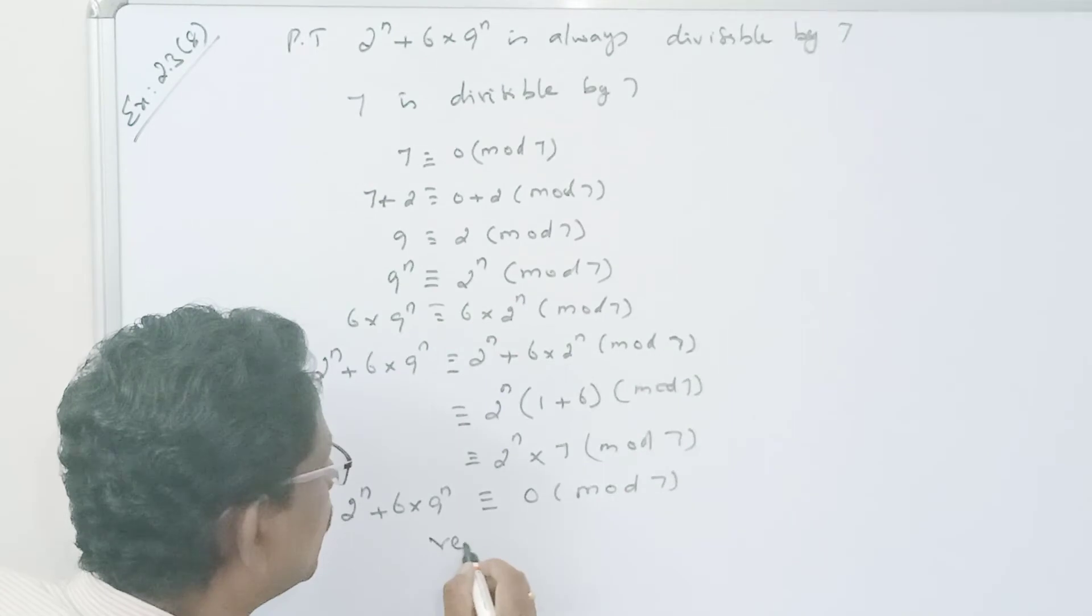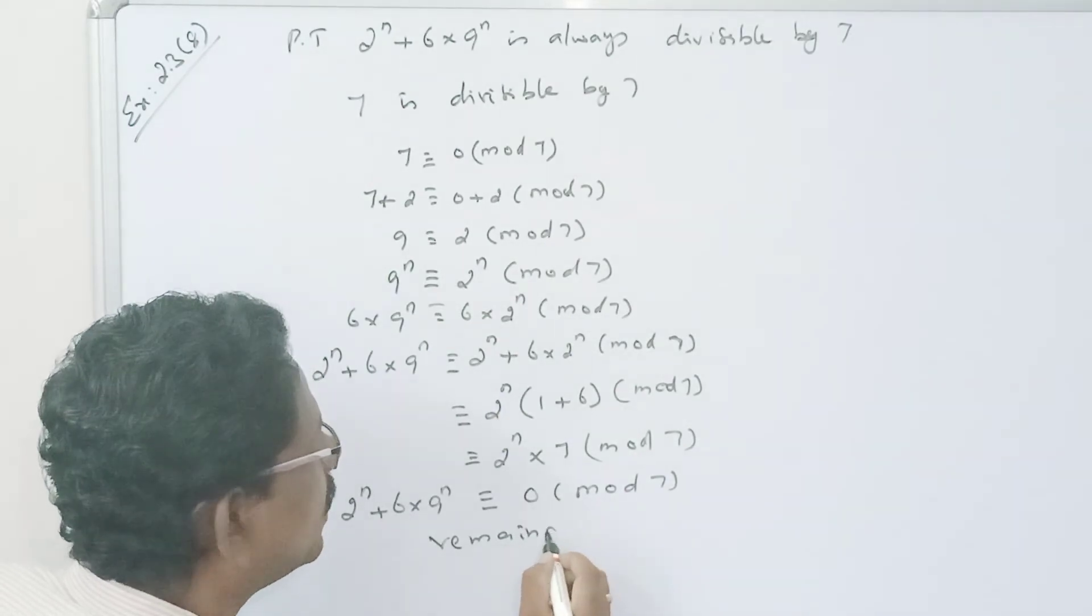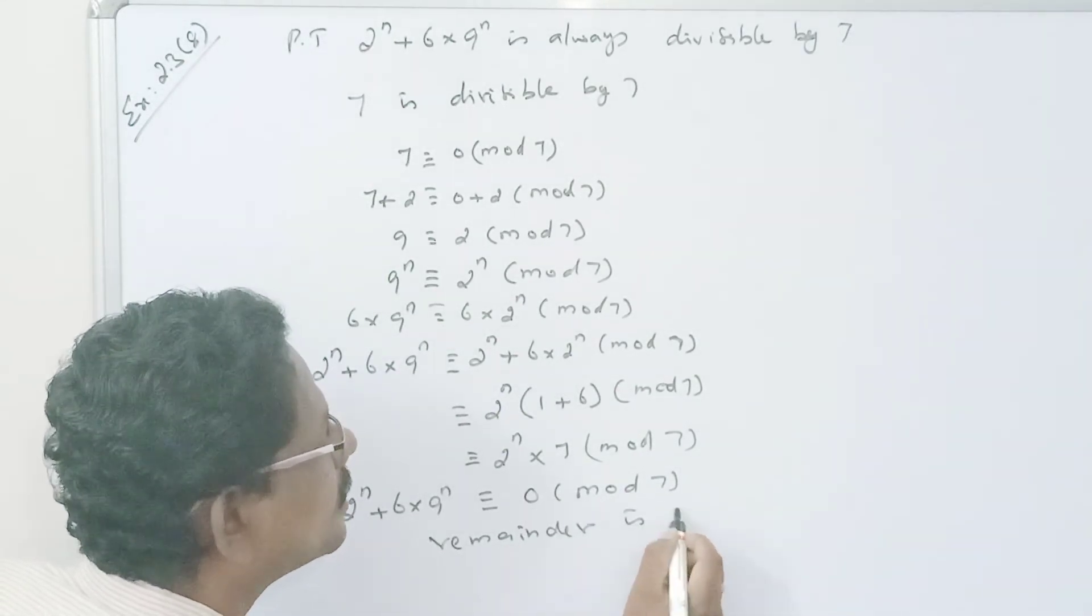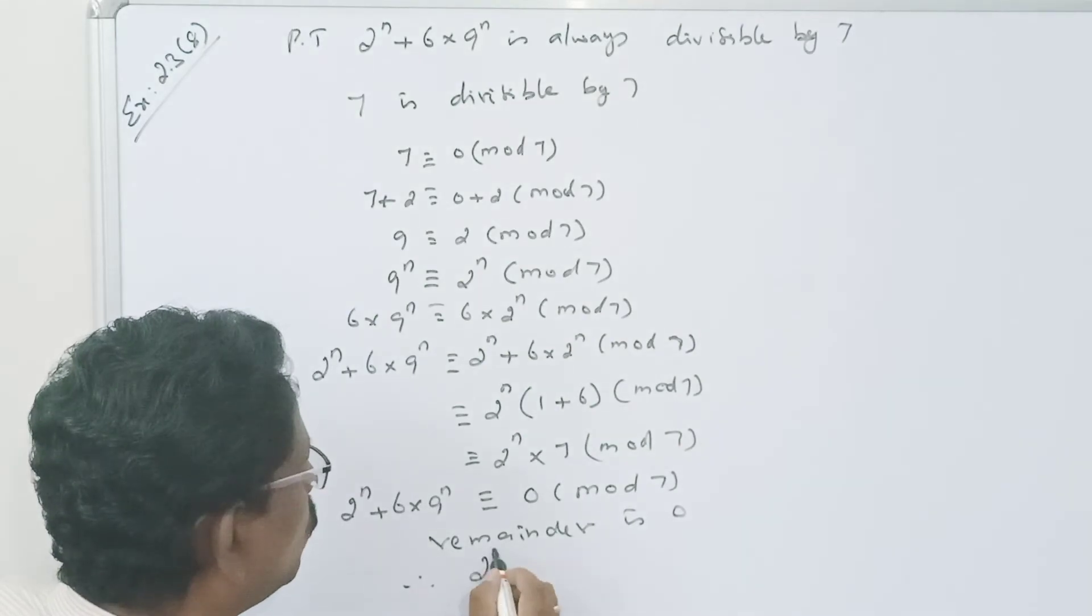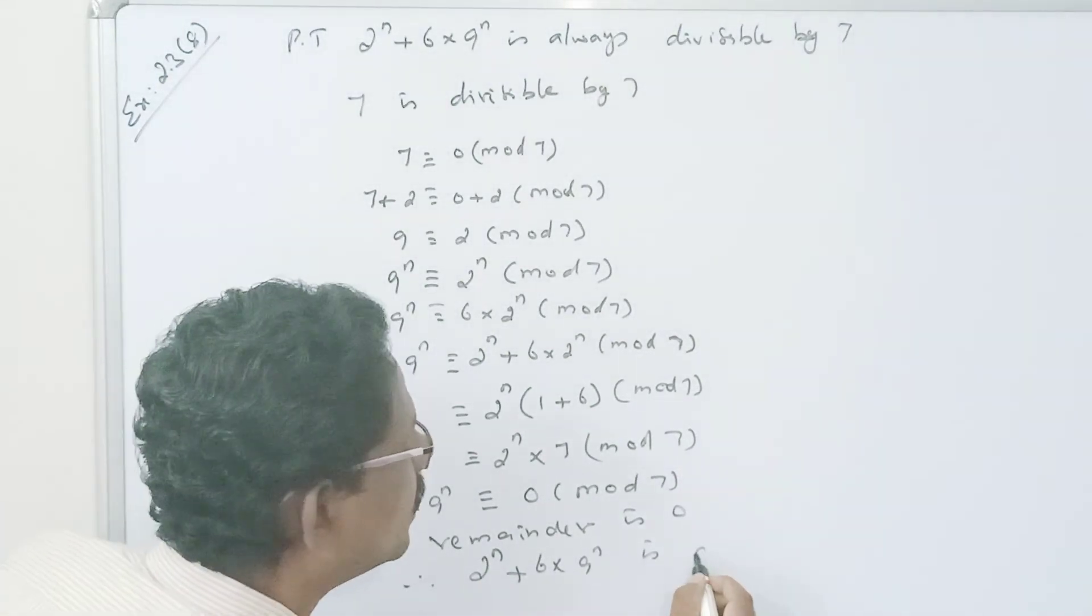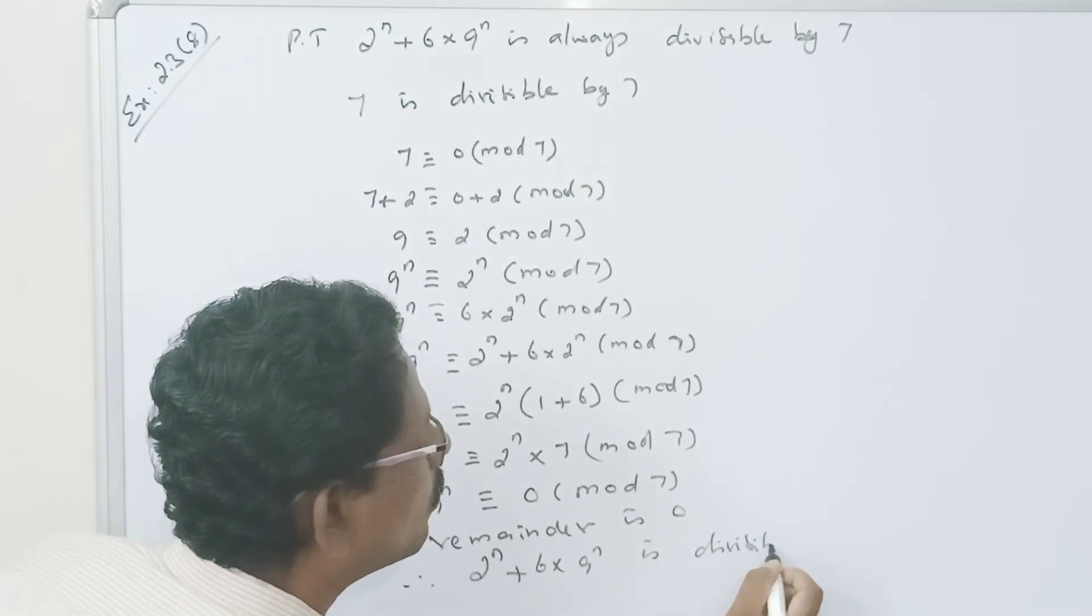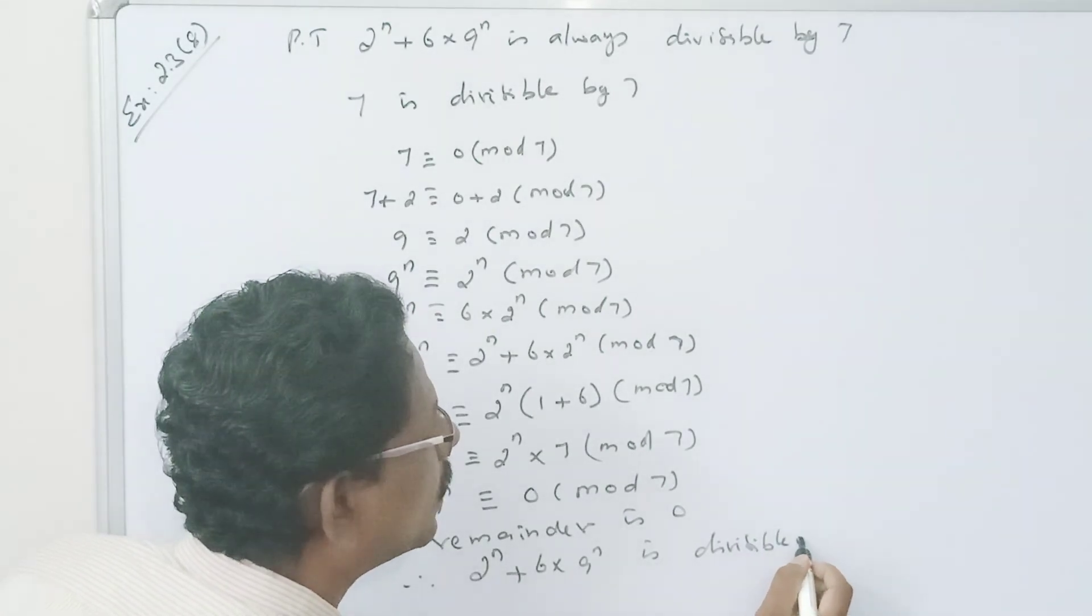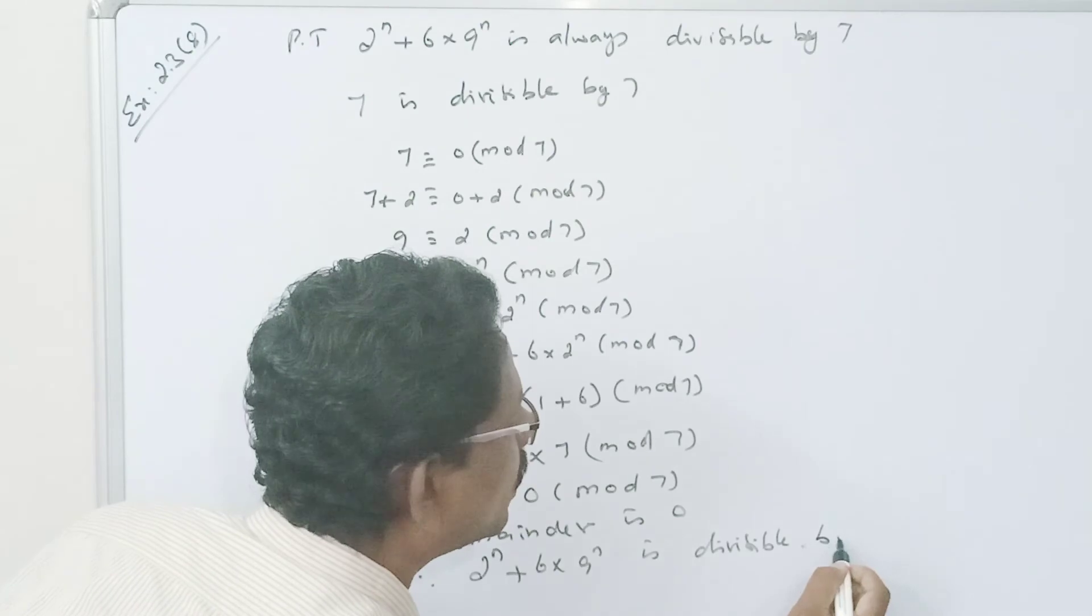The remainder is 0. Therefore, 2 power n plus 6 into 9 power n is divisible by 7.